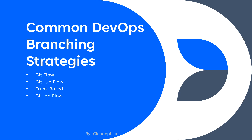In the support branches of Git Flow, we have feature branches, which are used to develop new features and branch off exclusively from the development branch. We also have a hotfix branch, which is used to deal with production issues where quick fixes are required. Then we have a release branch, which is used to aggregate fixes and improvements and prepare for the production release.